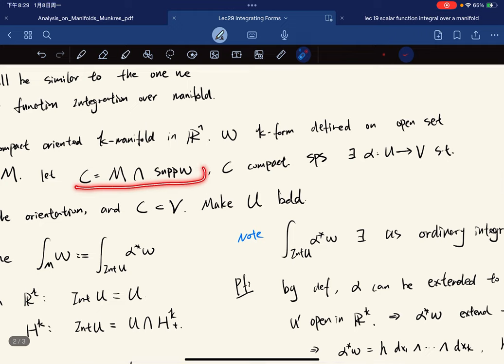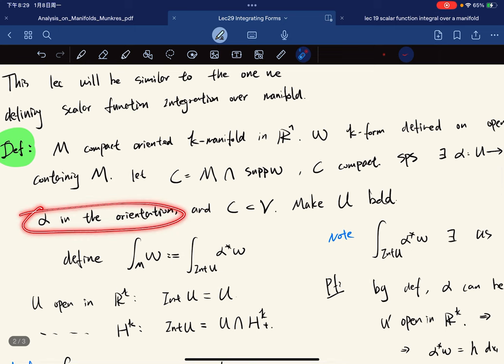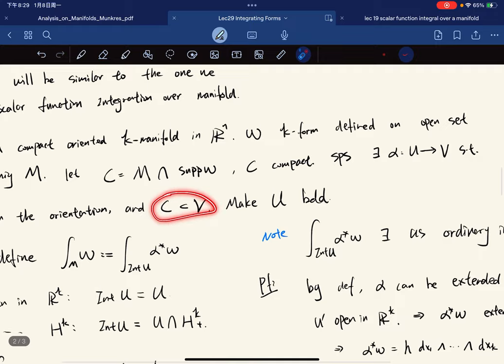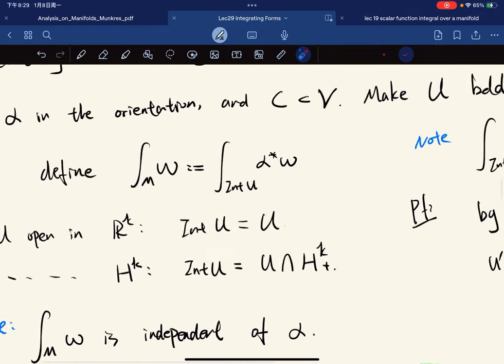Let C be this set. We know that C is compact. Suppose we have a coordinate patch that lies in the given orientation and contains C. We make U bounded and open, and then we define this integral to be equal to this expression.